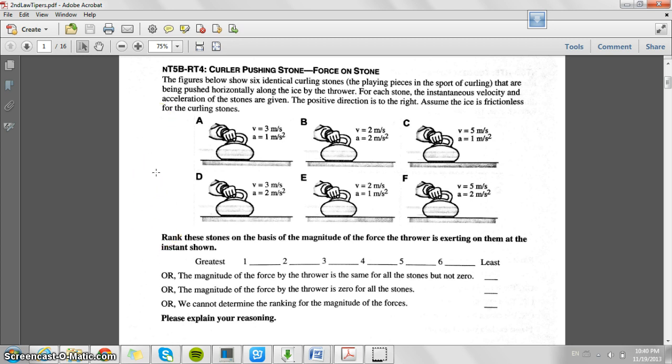And then we would have the force of the thrower, we'll call it positive to the right, going to the right. And because there's no friction, we would not have any force going to the left in the negative direction. We're only moving to the right.